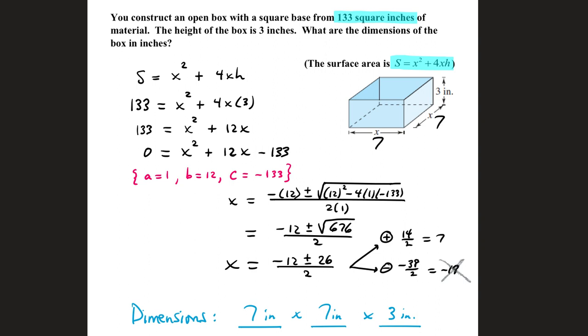Surface area is 133 square inches of material. The bottom is x by x, or x squared, and there are four sides that are 3 by x. So 133 equals x squared plus 12x. Bringing 133 over: x squared plus 12x minus 133.